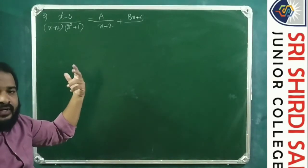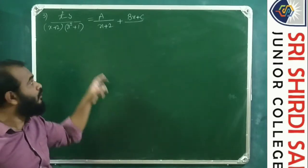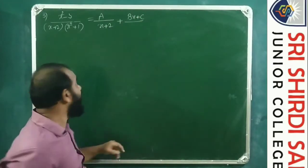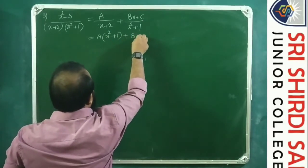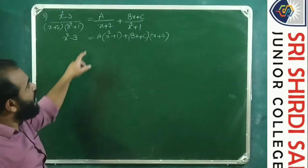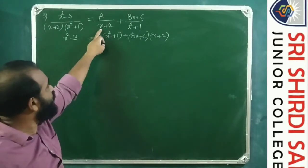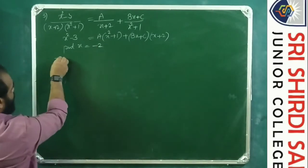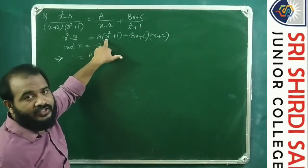So (x−1)(x³−1) = (x−1)(x−1)(x²+x+1) = (x−1)²(x²+x+1). The denominator contains a repeated linear factor (x−1)² — type 2 — and a non-repeated irreducible quadratic factor x²+x+1 — type 3. So this is a combination of type 2 and type 3.